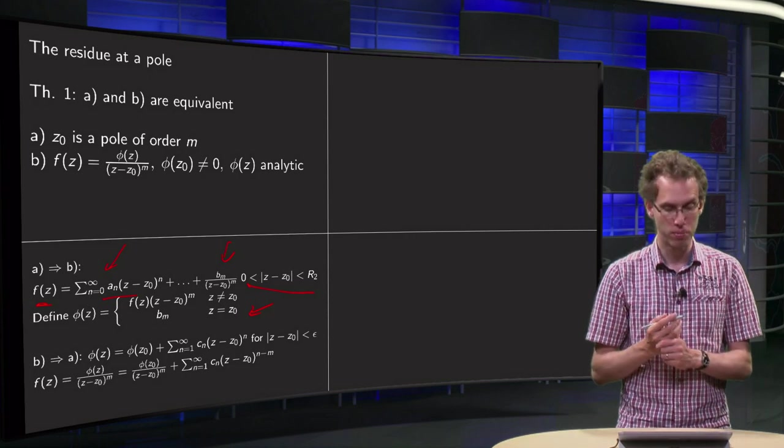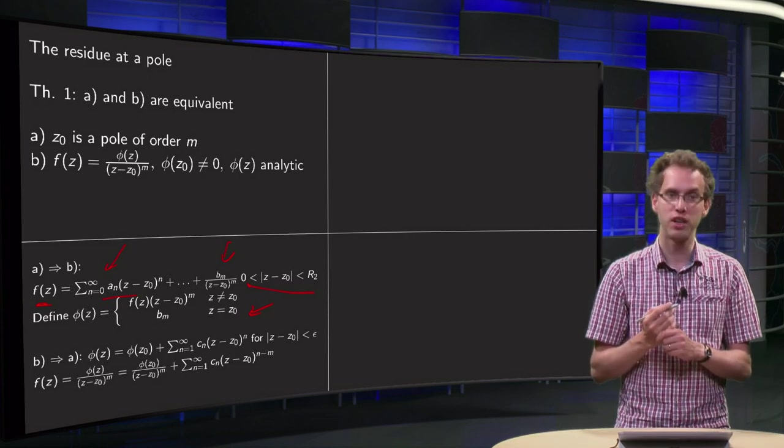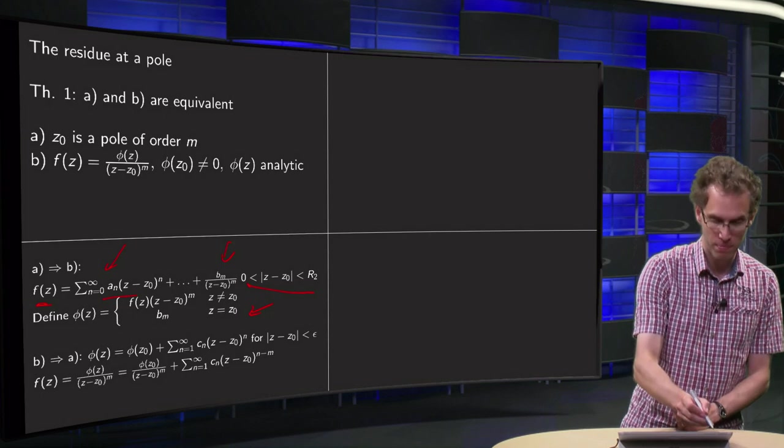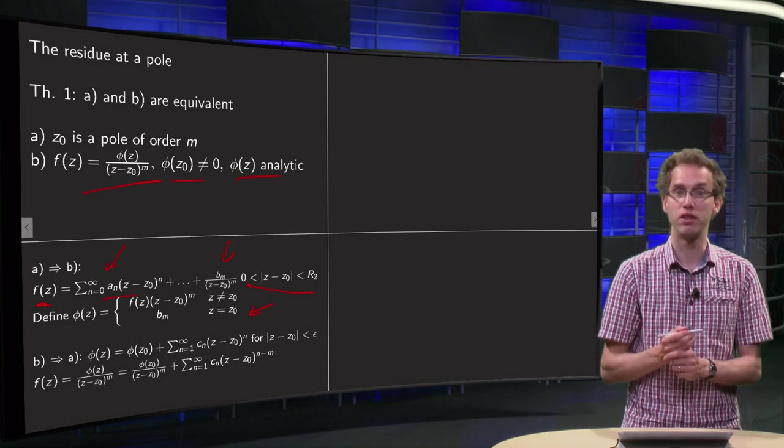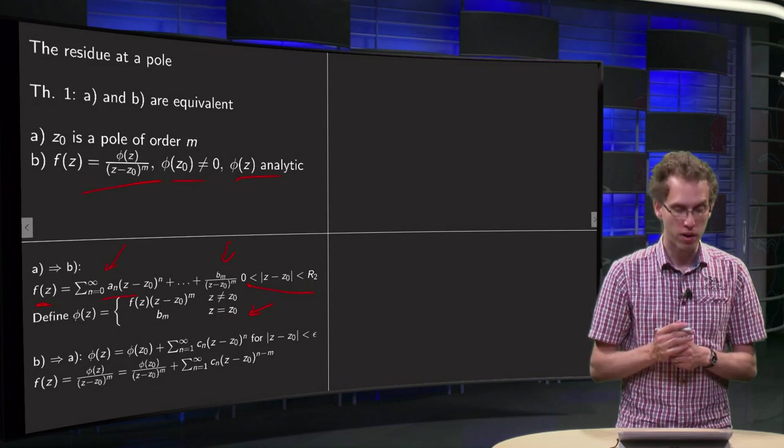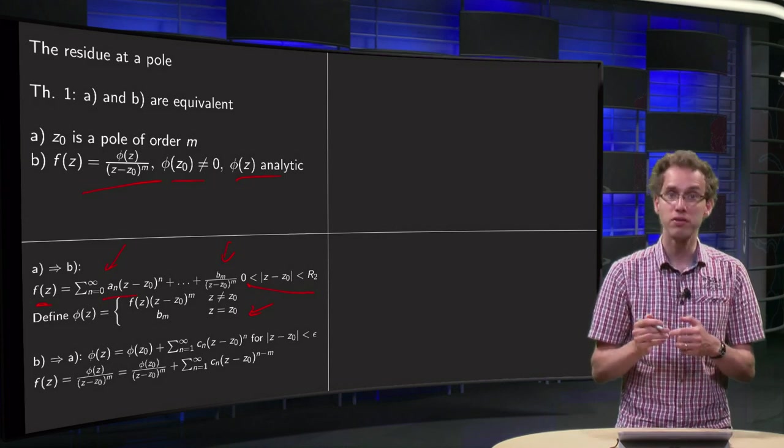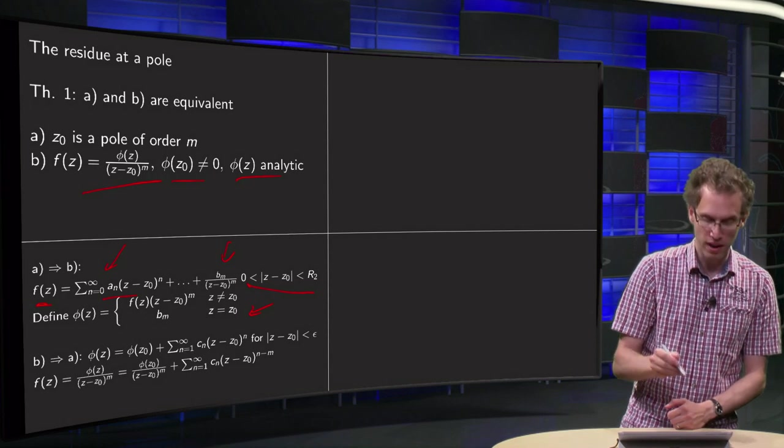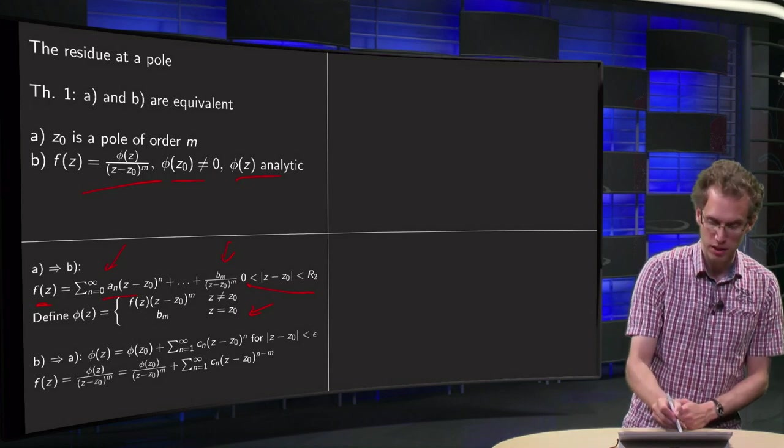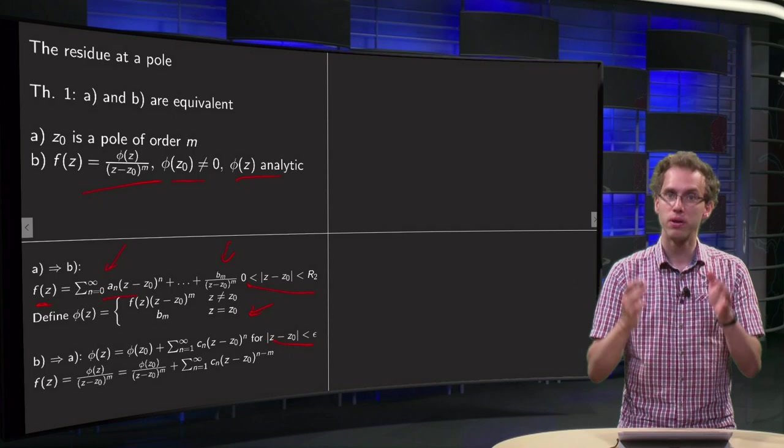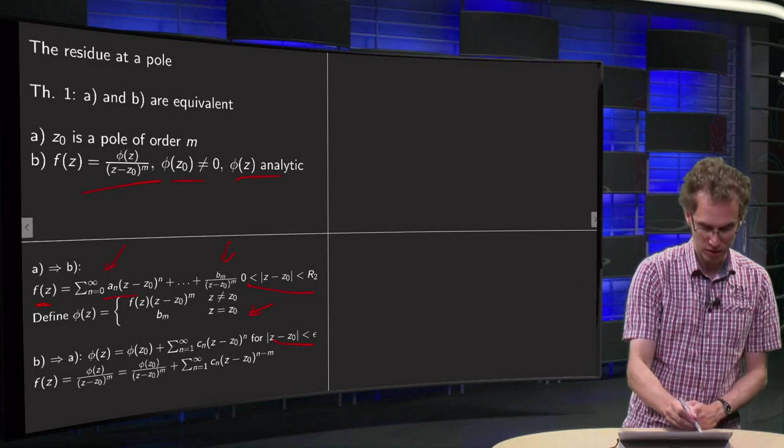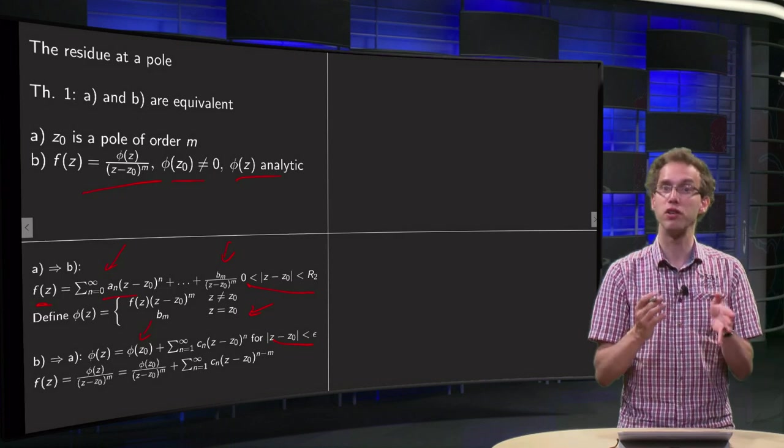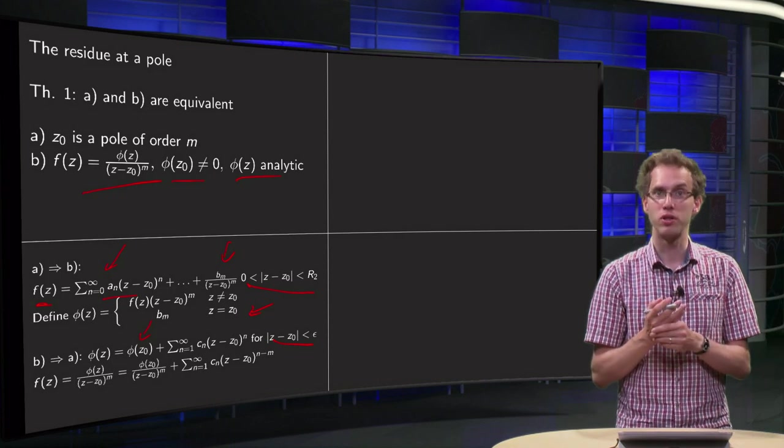Now from A to B, going from B to A is even a bit easier. Suppose your f(z) is of this form, where φ(z) is analytic and φ(z0) is not equal to 0. Well, if φ(z) is analytic, you can expand φ in a power series in z-z0 with norm smaller than epsilon, so here you have the power series where we put φ(z0) first because it's a special term, it's not equal to 0.